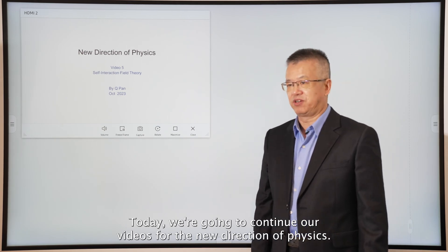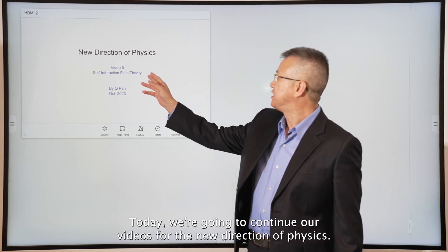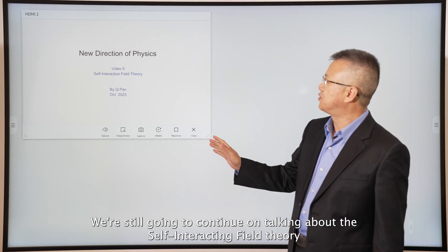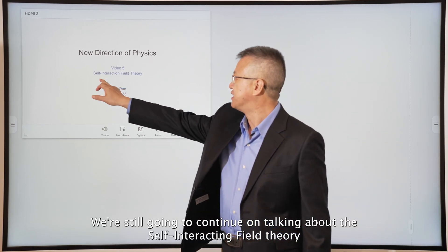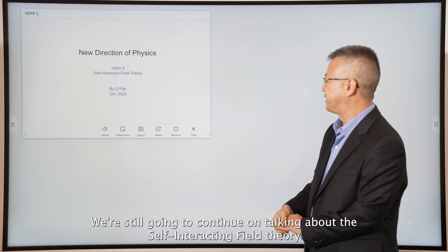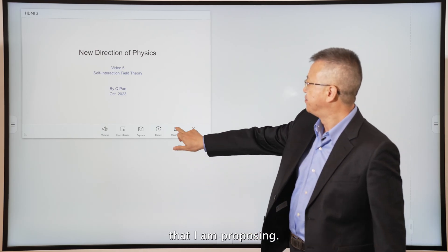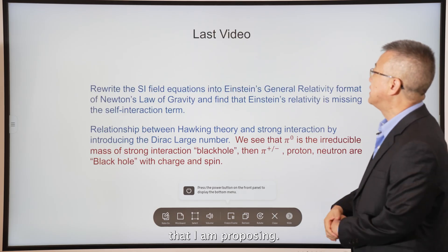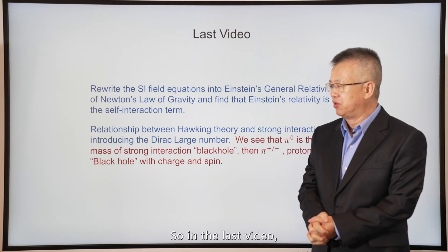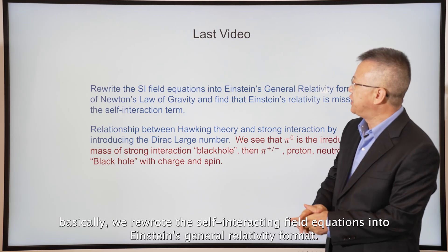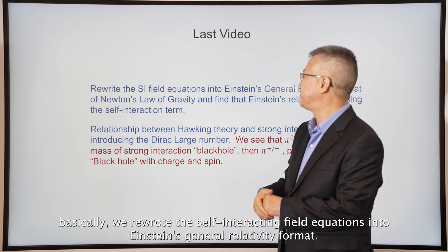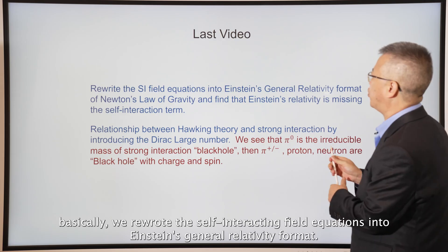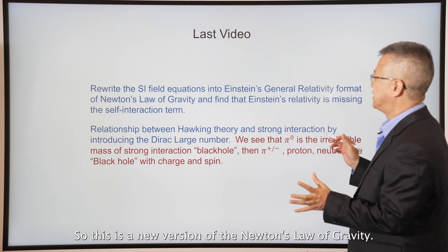Today we're going to continue our videos for the new direction of physics. This is video 5. We're going to continue talking about the self-interactive field theory. In the last video, we rewrote the self-interactive field equations into Einstein's general relativity format — a new version of Newton's law of gravity.